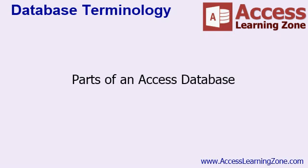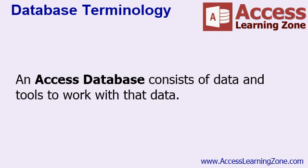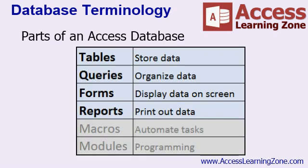Now that we know what a database is and what the benefits of using a Microsoft Access database are, let's talk about the parts of an Access database. An Access database consists of data and the tools to work with that data. Those tools are: tables, queries, forms, reports, and optionally macros and modules.